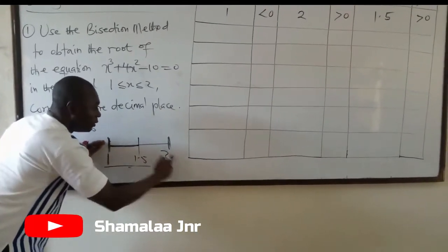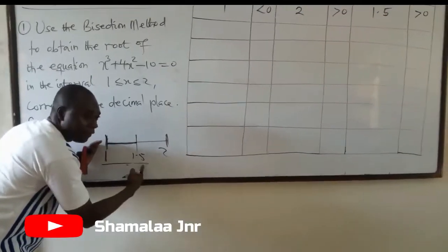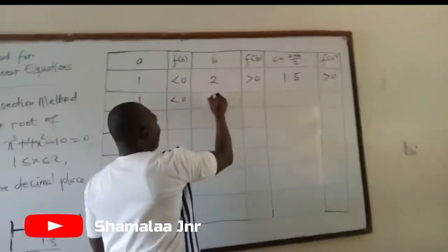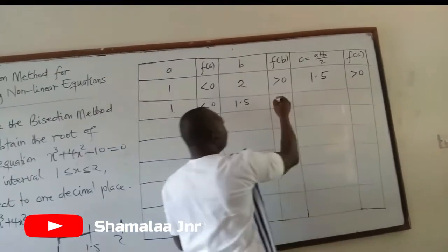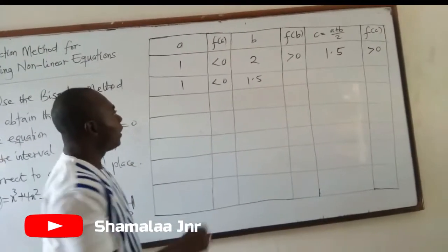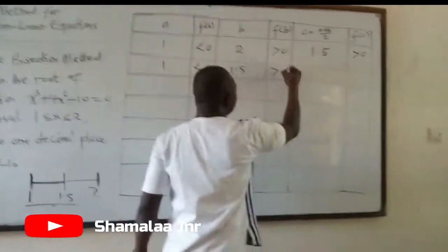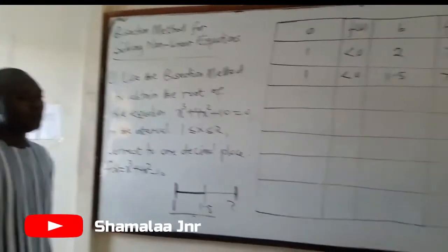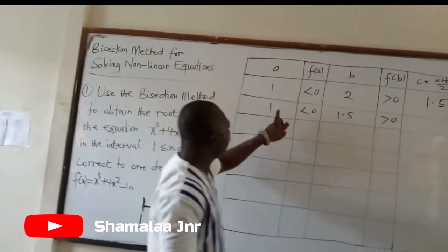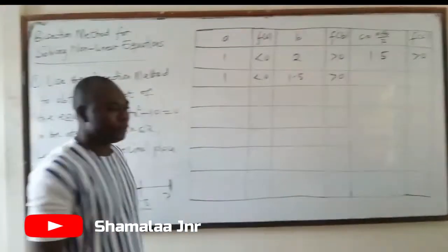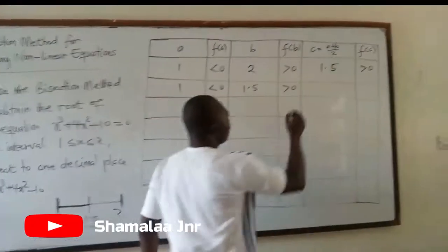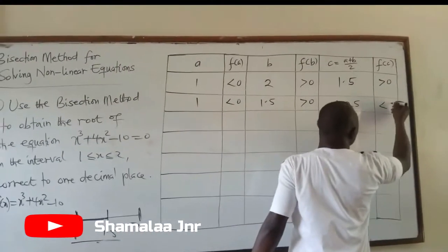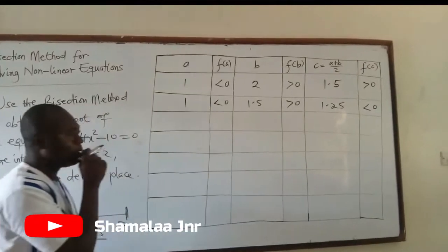So you close the interval from [1, 2] to [1, 1.5]. You find the midpoint: 1 + 1.5 divided by 2 gives 1.25. Then you find the functional value of 1.25, which gives you less than 0.